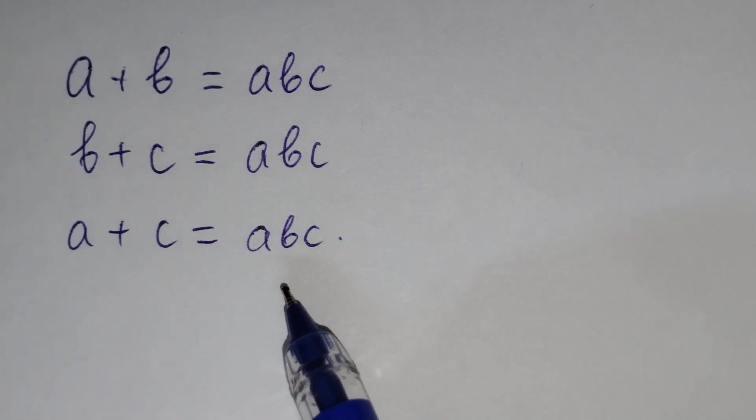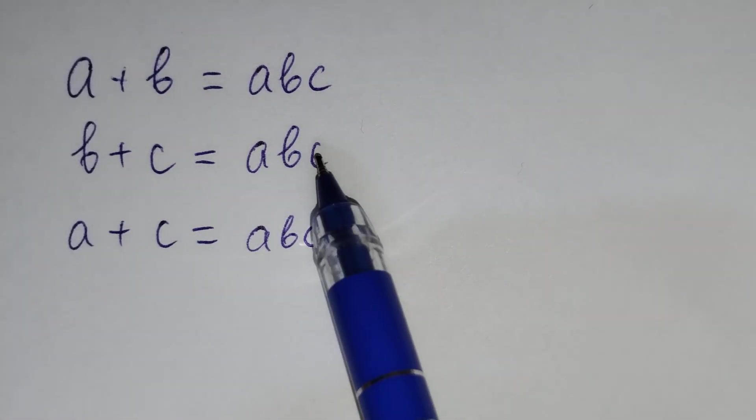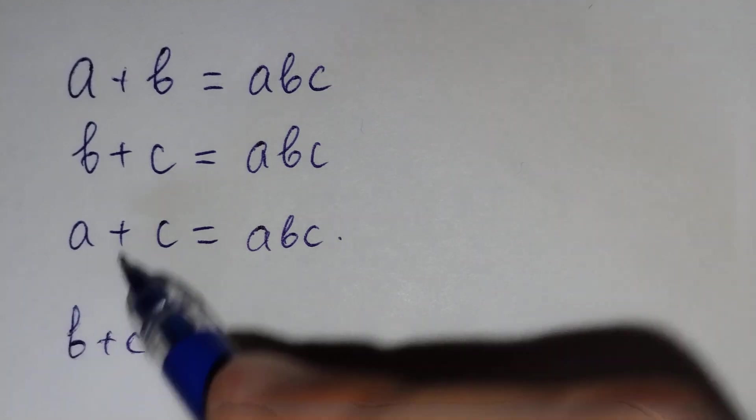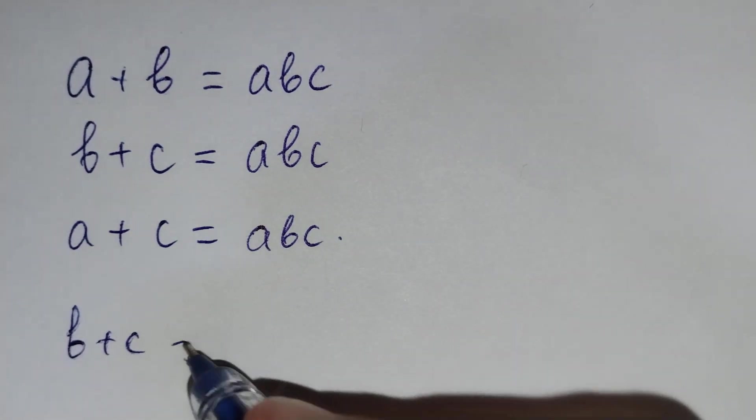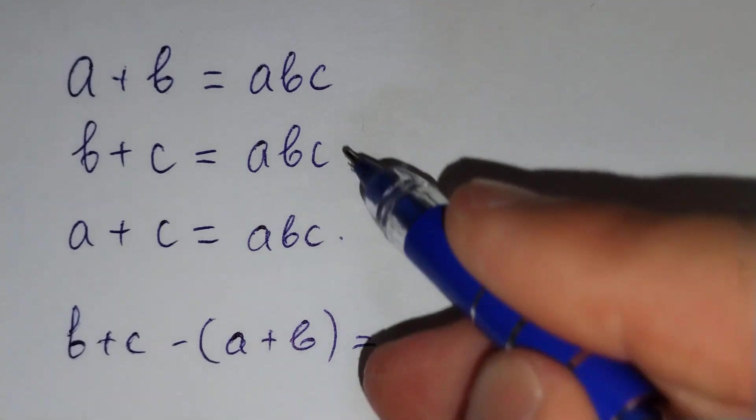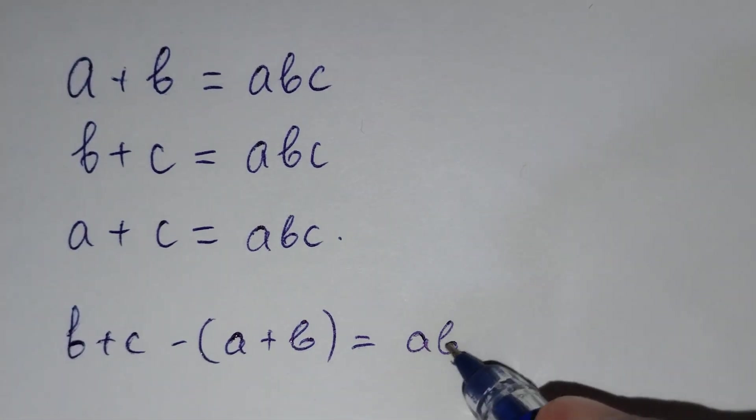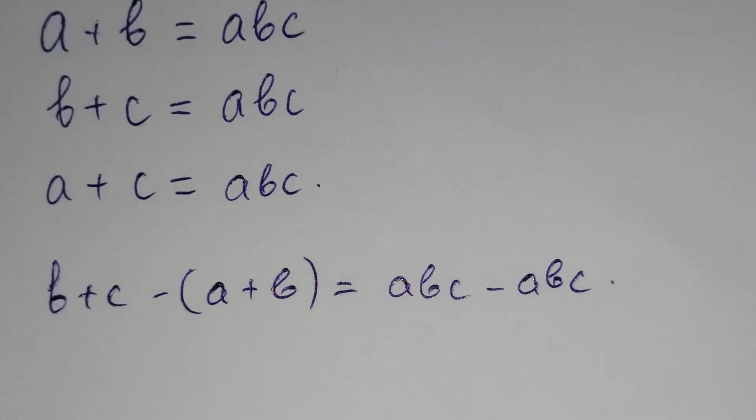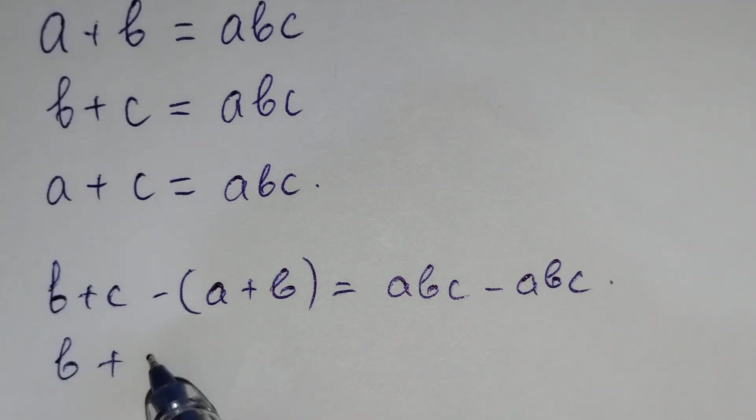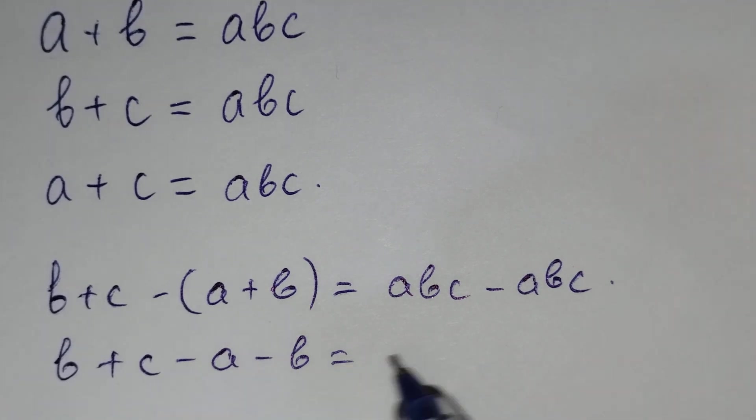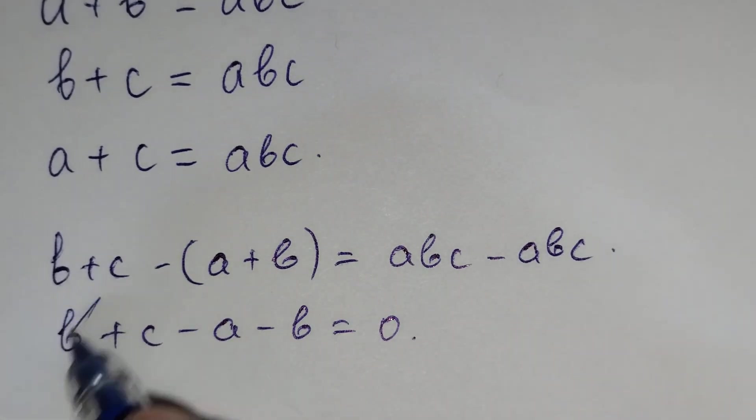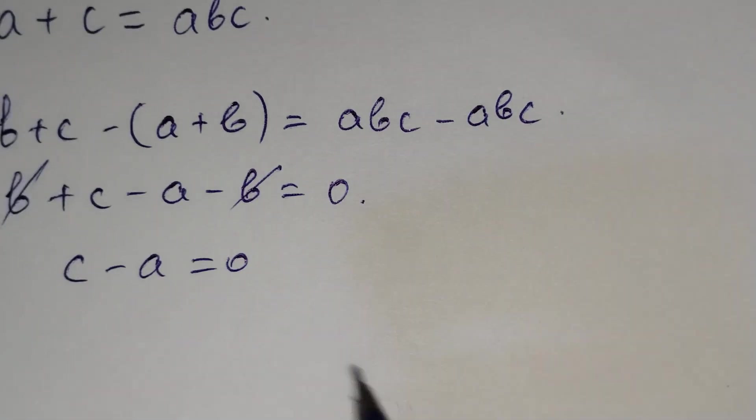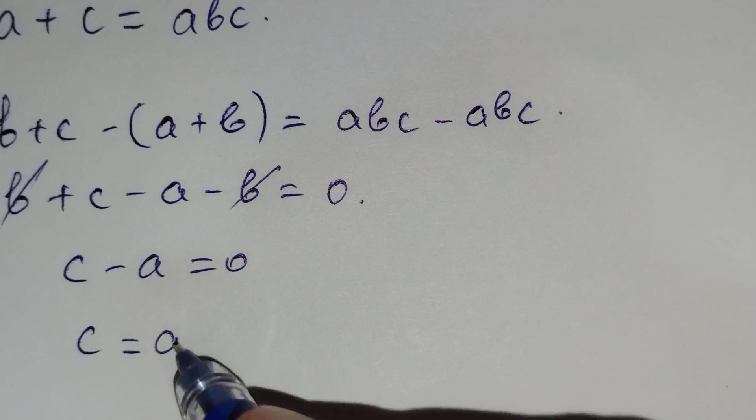How should we solve this problem? If we subtract the second equation from the first one, b plus c minus a plus b equals abc minus abc, and here b plus c minus a minus b equals zero. It means c minus a equals zero, and so c equals a.